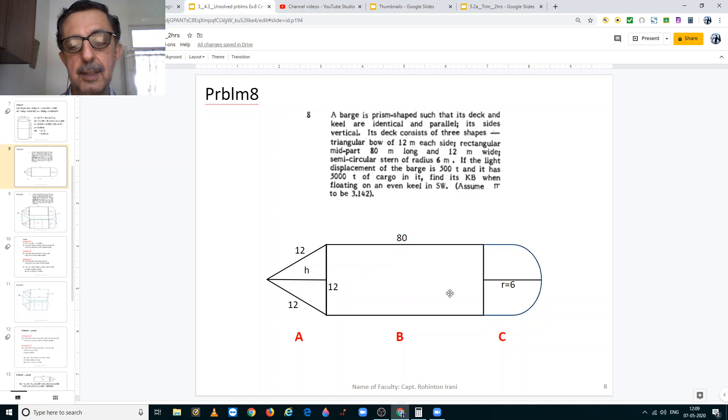The rectangular mid section length is 80 meters, breadth is 12 meters. And the semicircular stern, the radius is 6 meters.